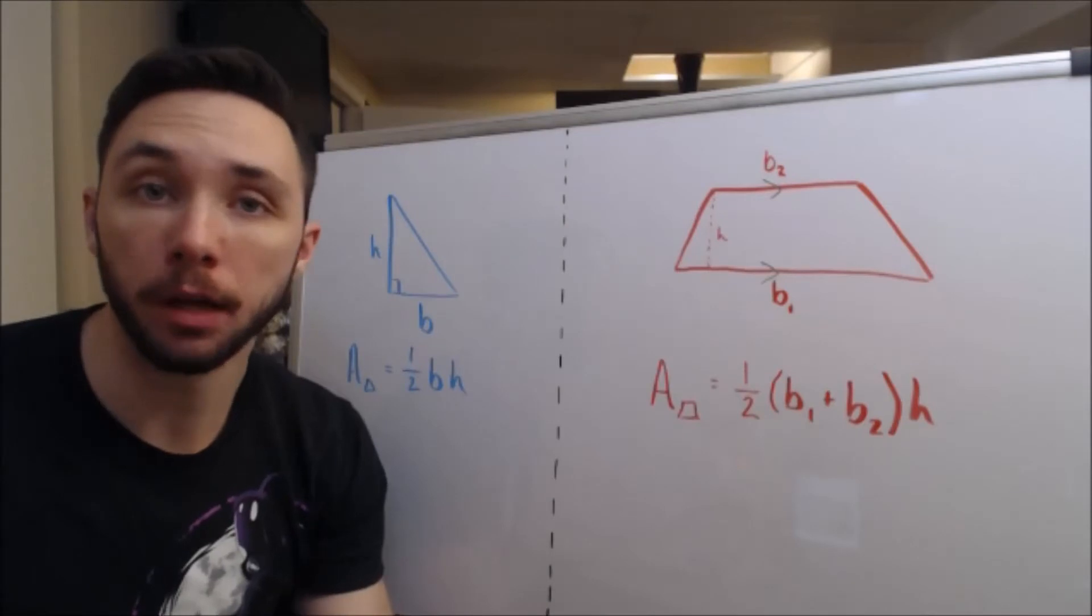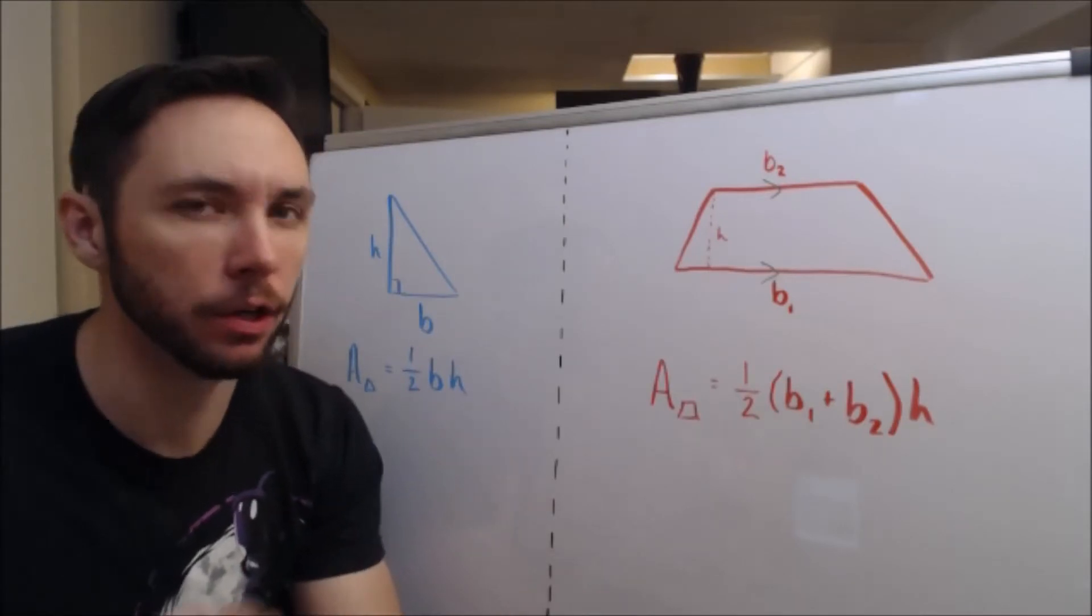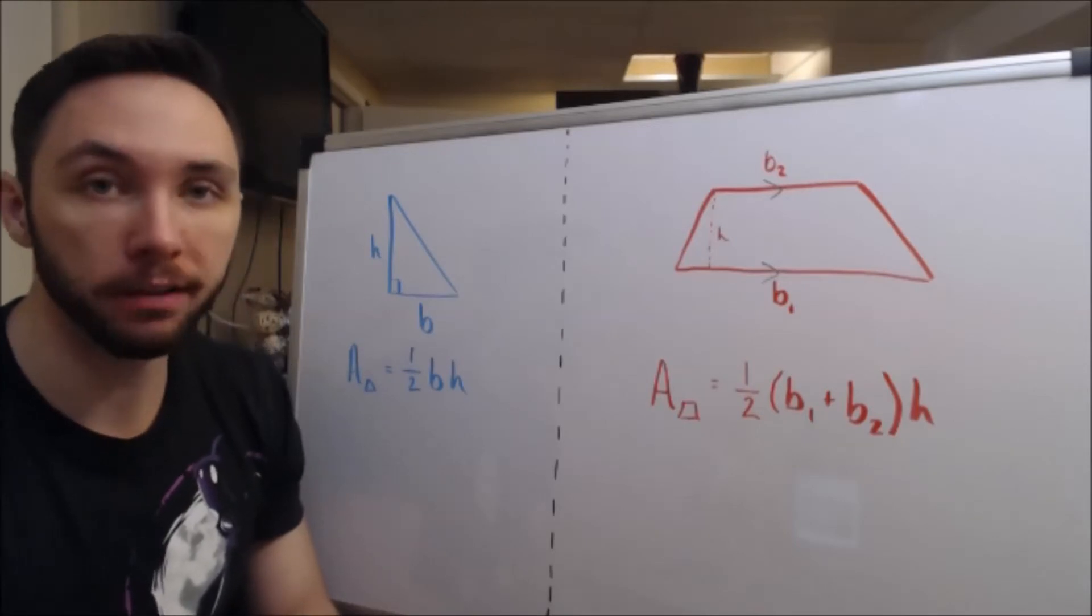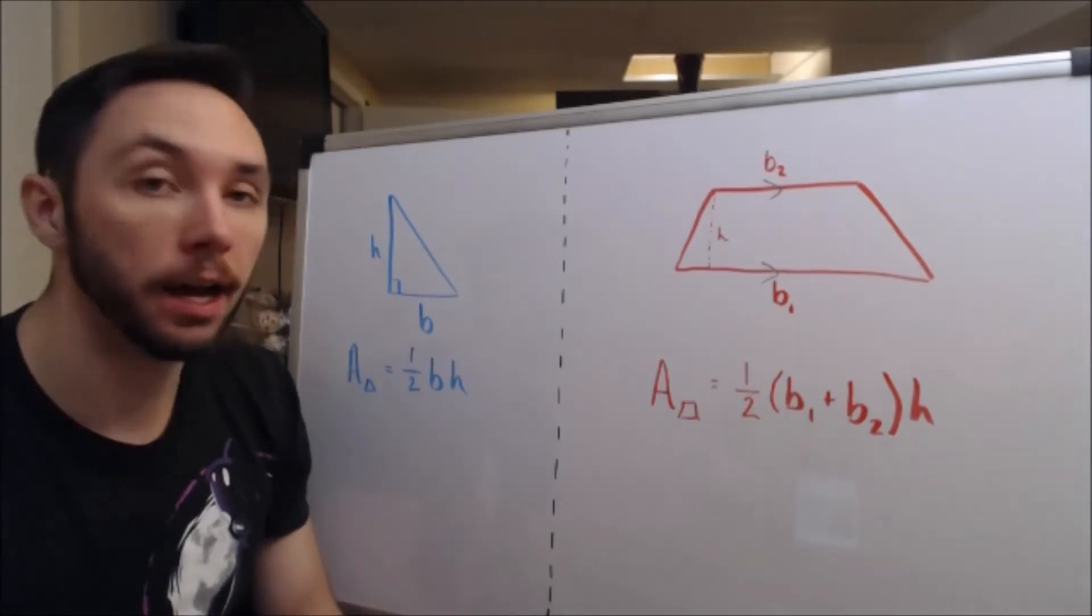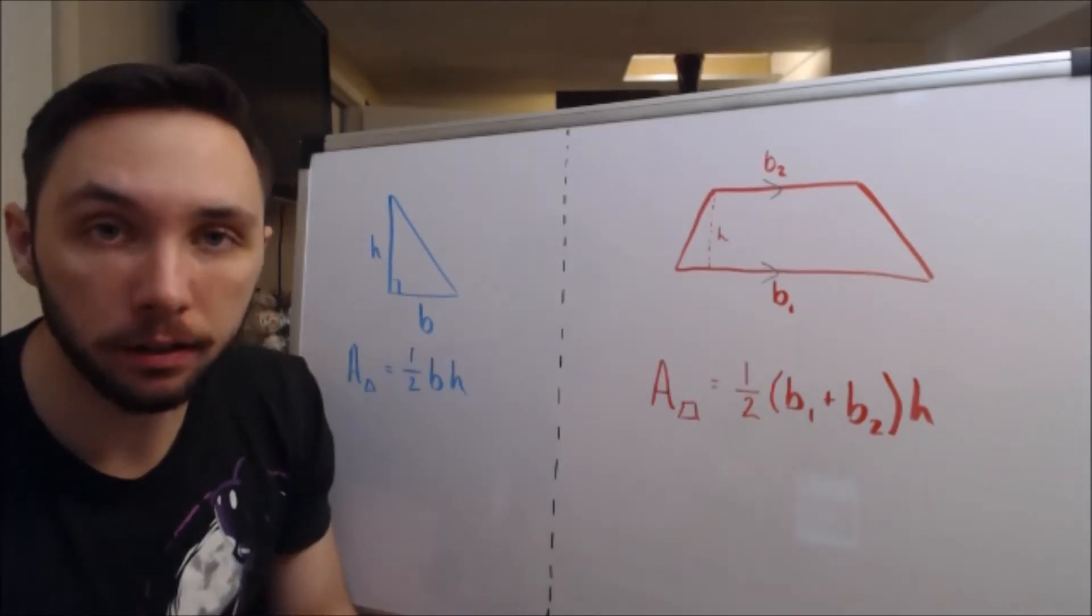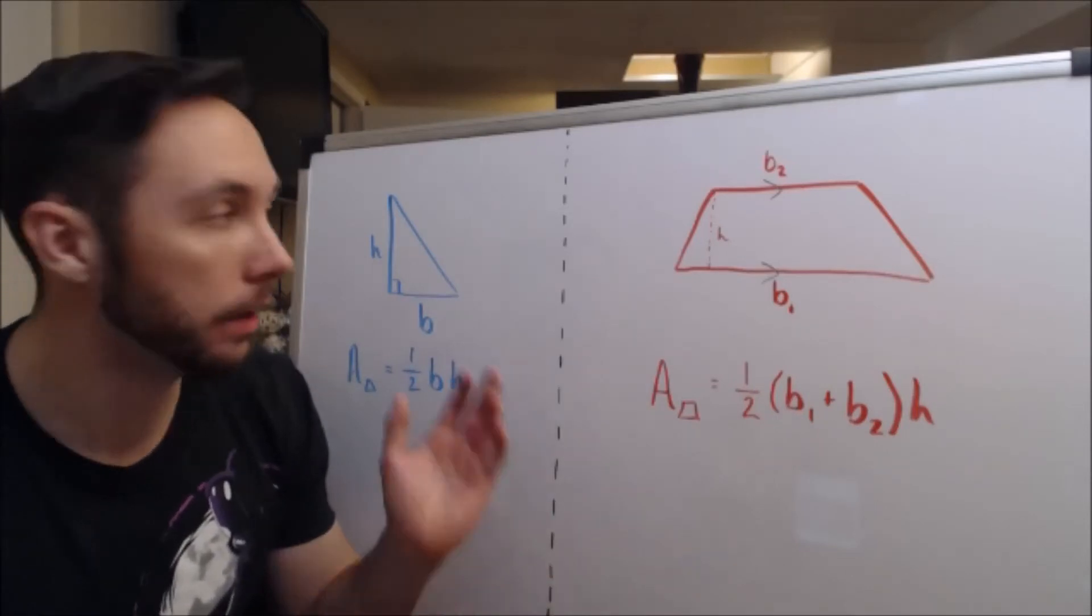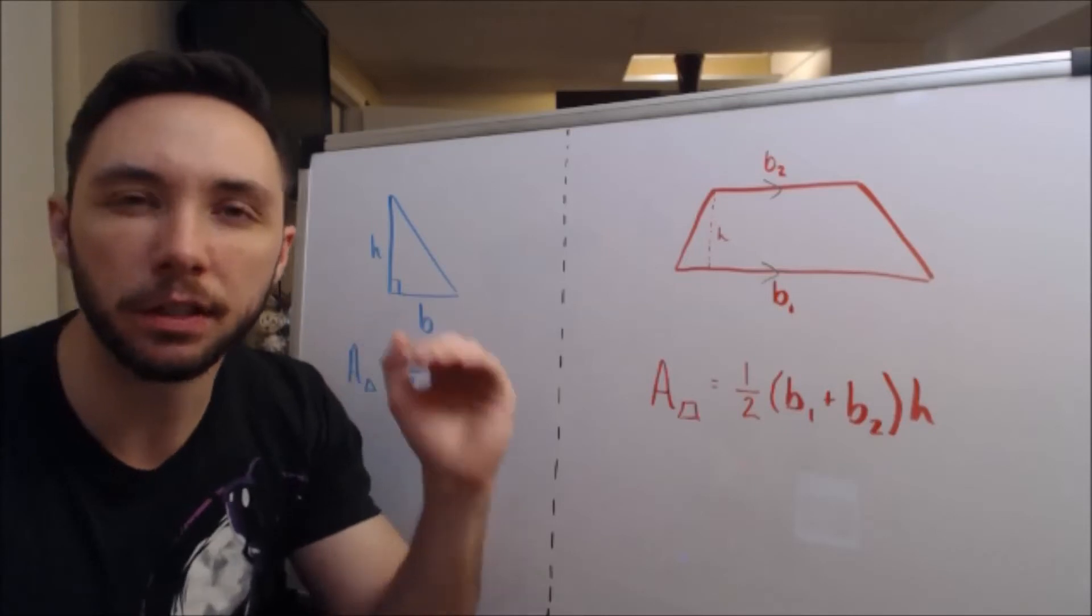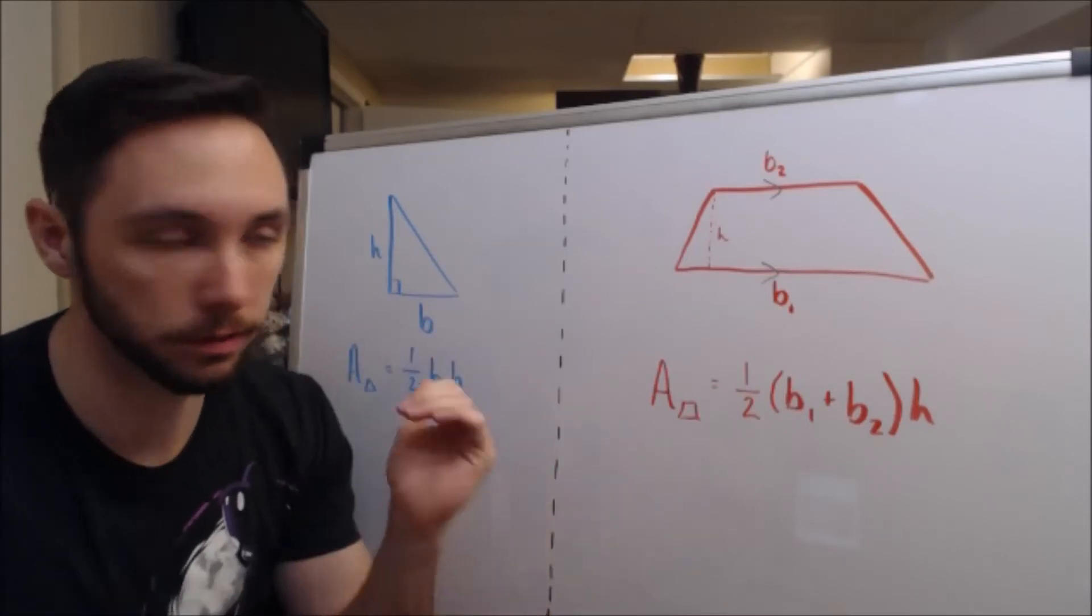So let's jump into it by looking at a few of the prereq skills, what we need to know in order to prove the Pythagorean Theorem using Garfield's approach. Two areas that will be critical for this proof. First one, area of a triangle, one half base times height. If you notice I've drawn a right triangle, that's very intentional. You don't have to have a right triangle for this area, but the proof specifically calls for right triangles. So that's the reason why I've drawn that.